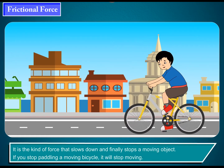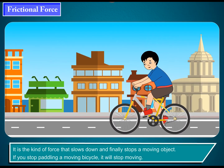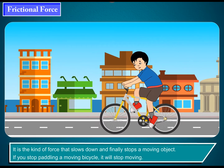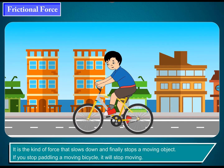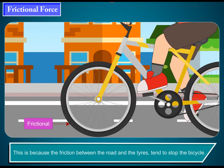Frictional force is the kind of force that slows down and finally stops a moving object. If you stop pedaling a moving bicycle, it will stop moving. This is because the friction between the road and the tires tends to stop the bicycle. Frictional force is the force that opposes the movement of an object over another.